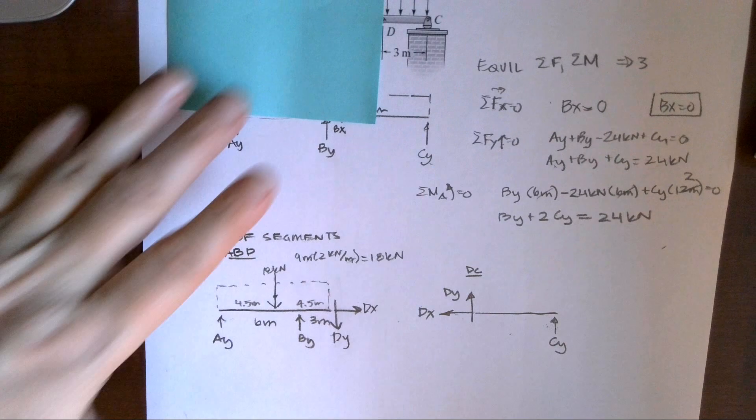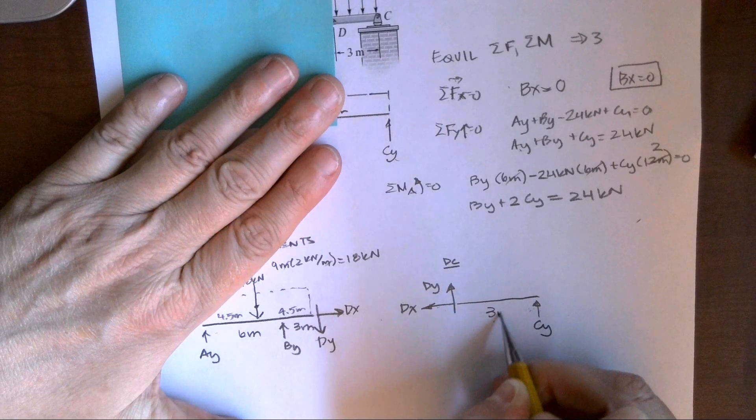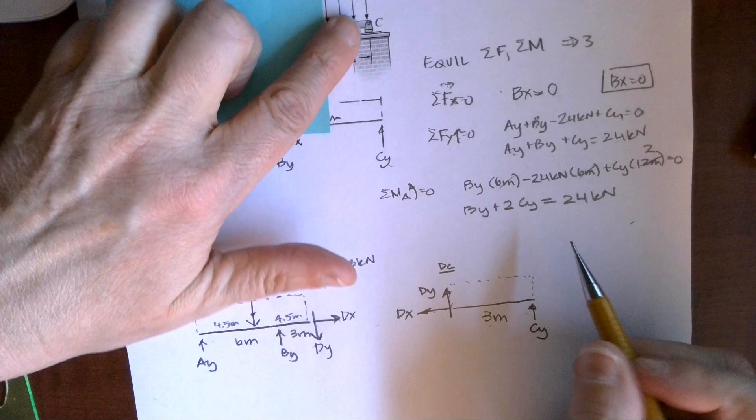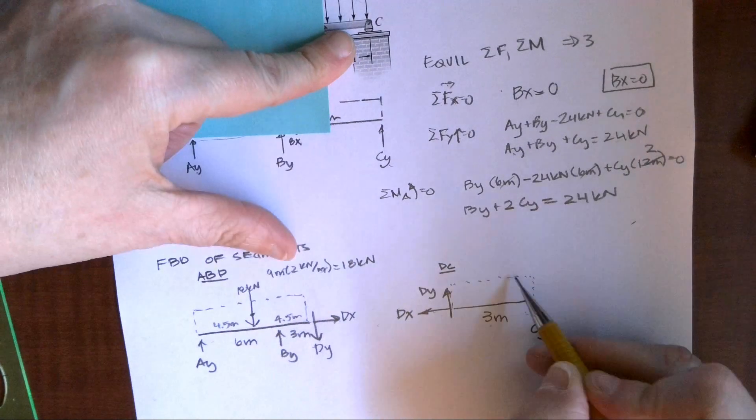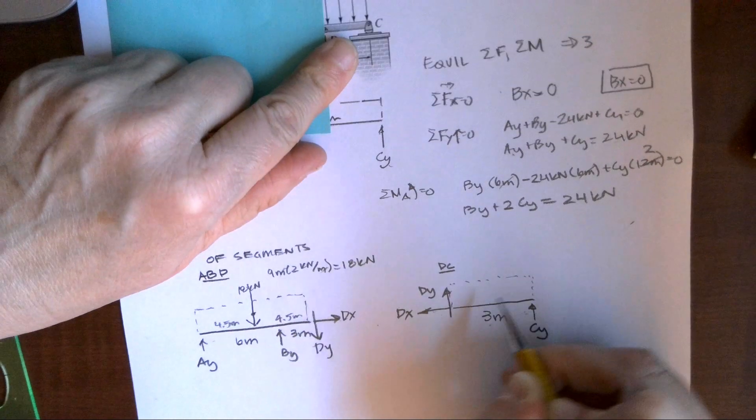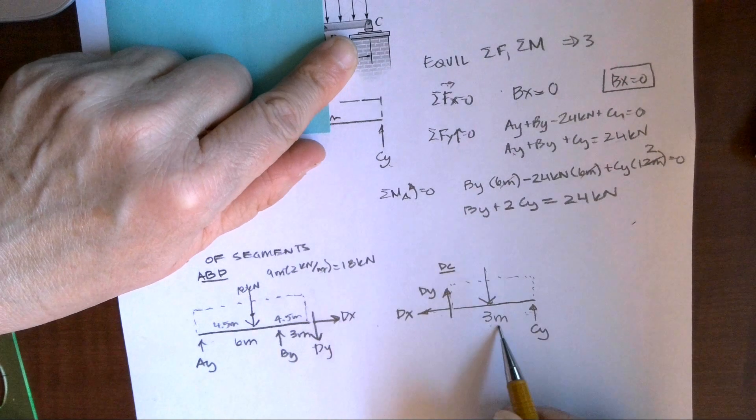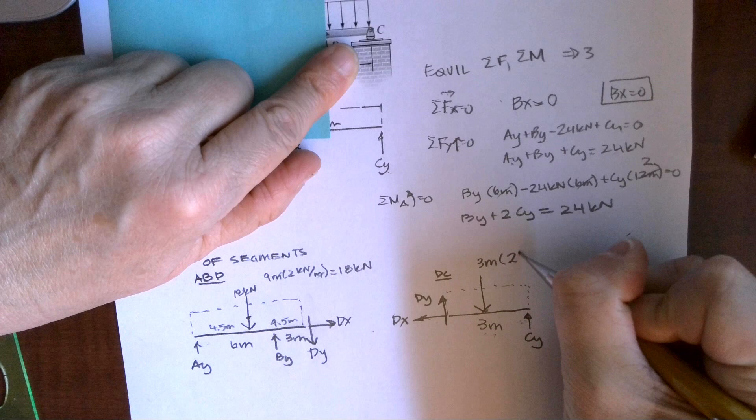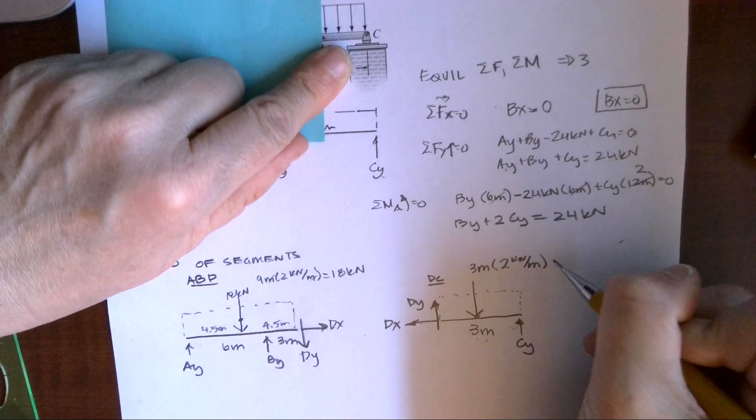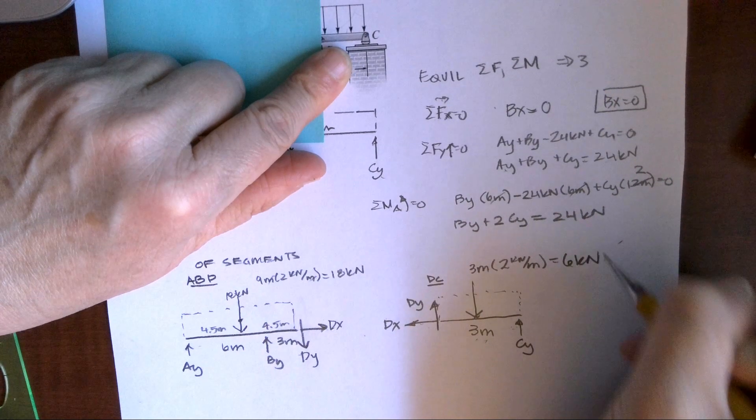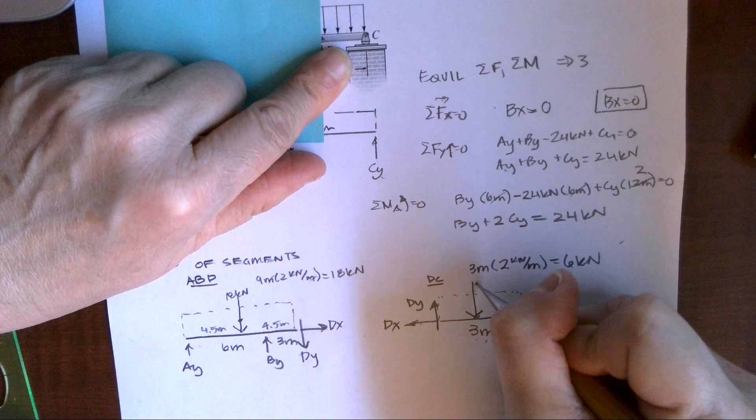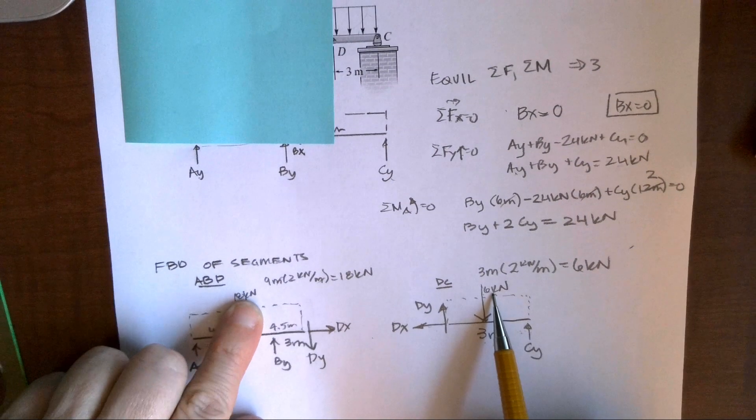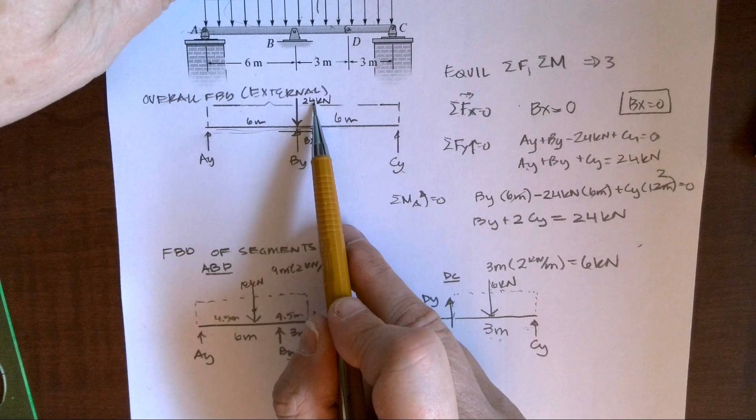So, I'm going to re-look at my distances and I'm going to recognize again that I still have this uniform load of two kilonewton meters, but this time I have it just over the three meter section. So, I'm going to have three meters, that's my base, two kilonewton meters, that's my height, and I get six kilonewtons as my point load. So, let's look. Six plus 18 is 24. We just separate it by segments.